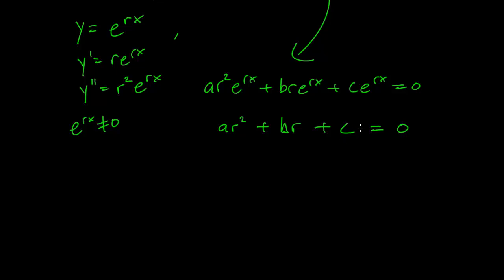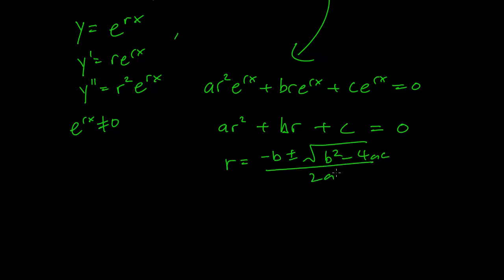This is going to be a pretty easy thing to solve. We have the quadratic formula to help us here. So we can write r equals minus b plus or minus the square root of b squared minus 4ac, all over 2a. So we have two solutions, one plus and one minus — call them r1 and r2.